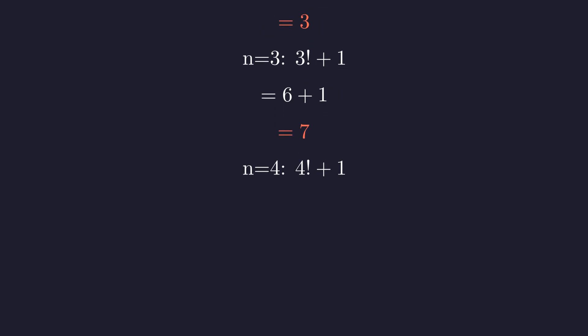Now let's try n equals 4. 4 factorial is 24. Adding 1 gives us 25, and 25 is a perfect square. It's 5 squared. We've found our first solution.